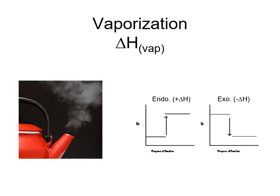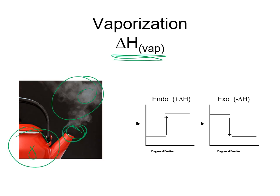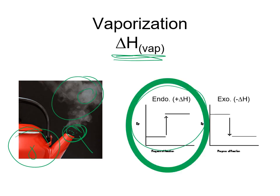Vaporization: you're taking liquid water and turning it into vapor. The process of vaporization goes from liquid in the pot to individual gas molecules. That is an endothermic change — it takes a lot of energy to get molecules into the gas state. Those gas molecules can then lose energy and come back down into liquid state as tiny droplets, which we see as steam.